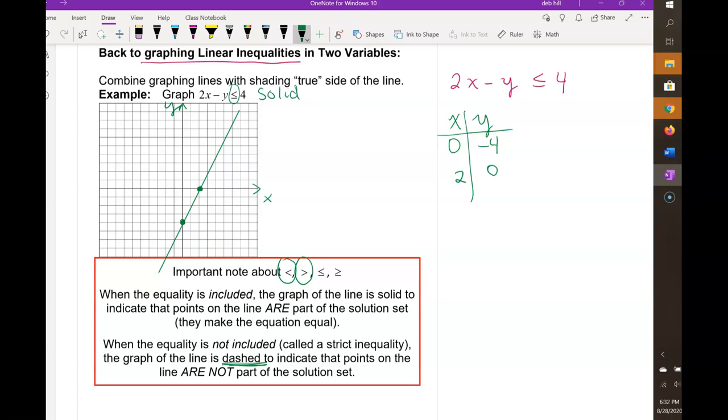Then we need to figure out where to shade. Let's use the test 0, 0 method. I put in 2 times 0 minus 0, and I want to know if that's less than or equal to 4. Well, it looks like 0 is less than or equal to 4. Show me some evidence of your thinking. That's true. So I need to indicate the side of the line where 0, 0 is. This is what we mean by graphing a linear inequality.